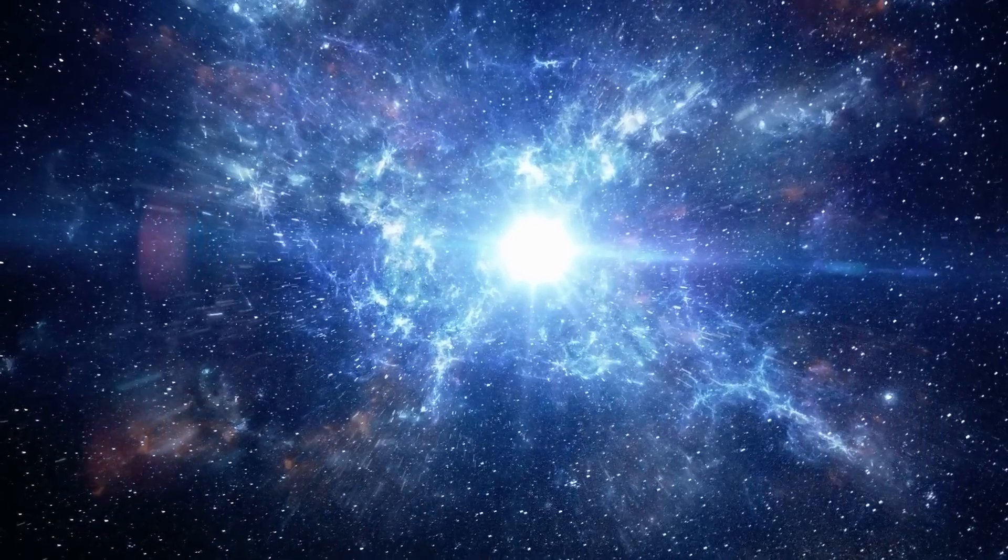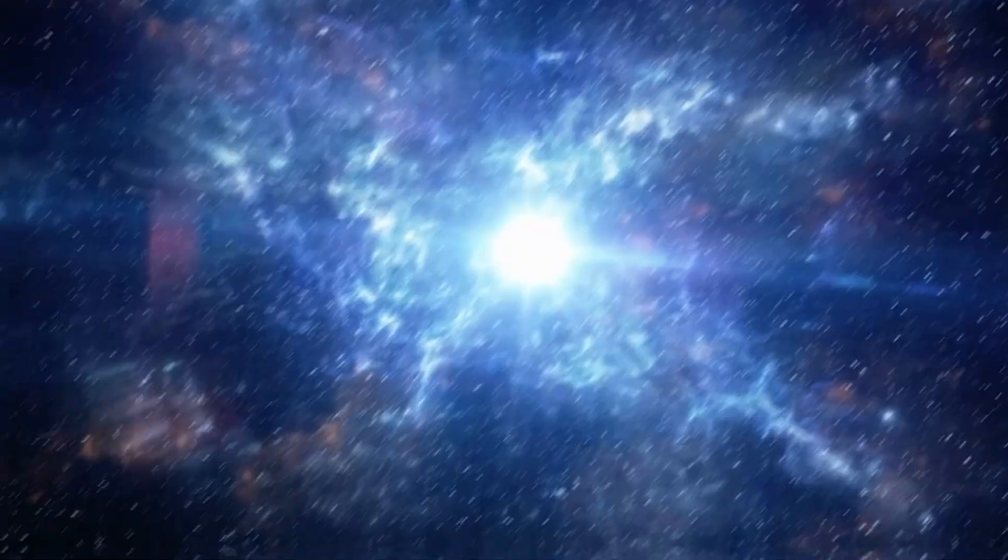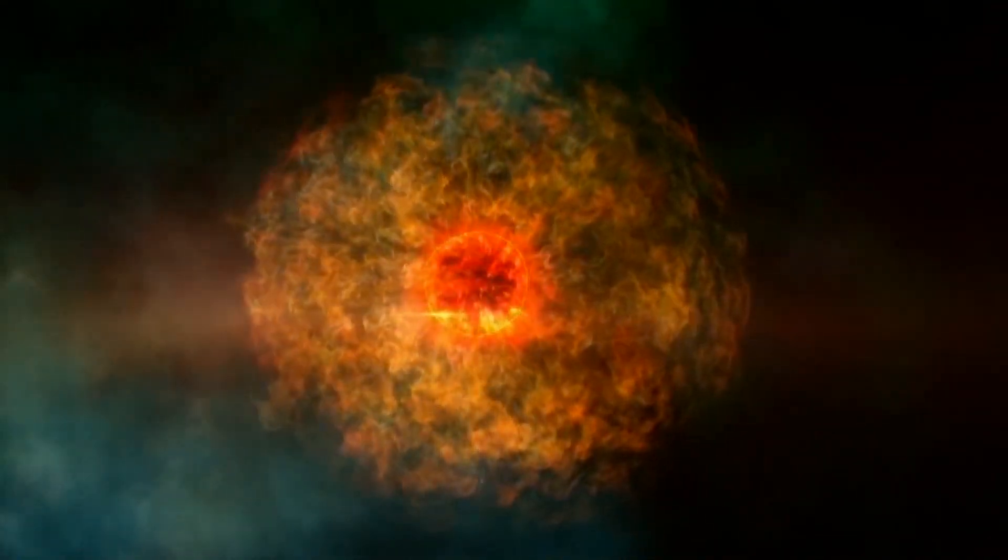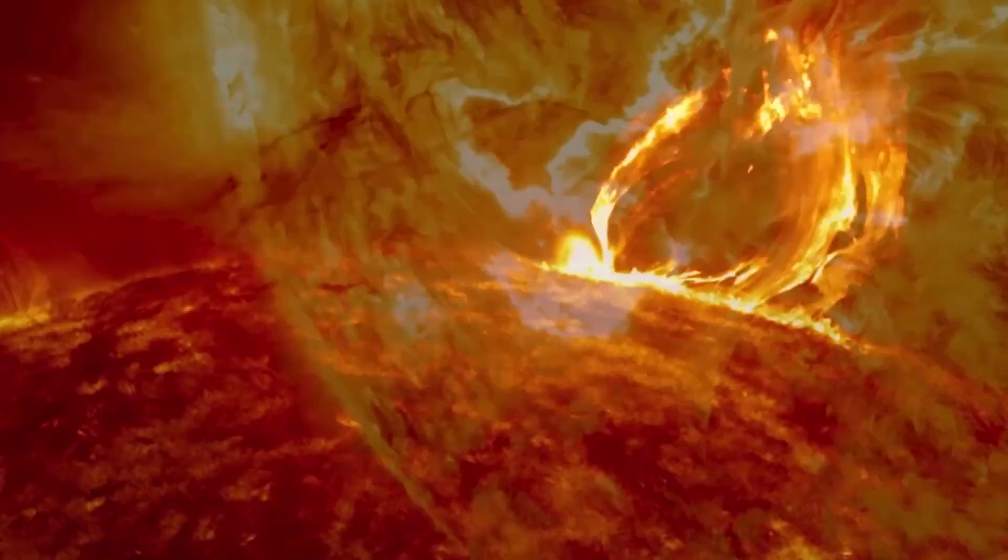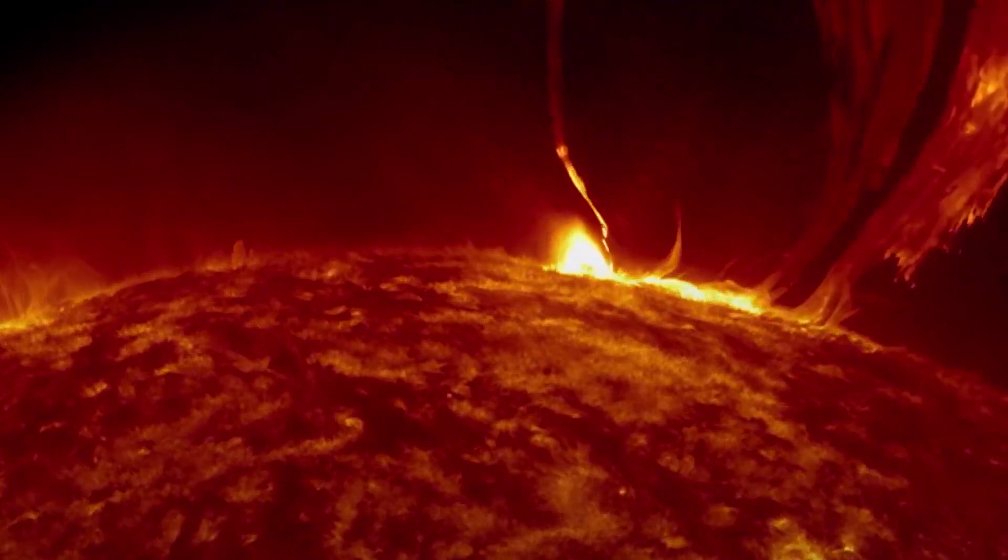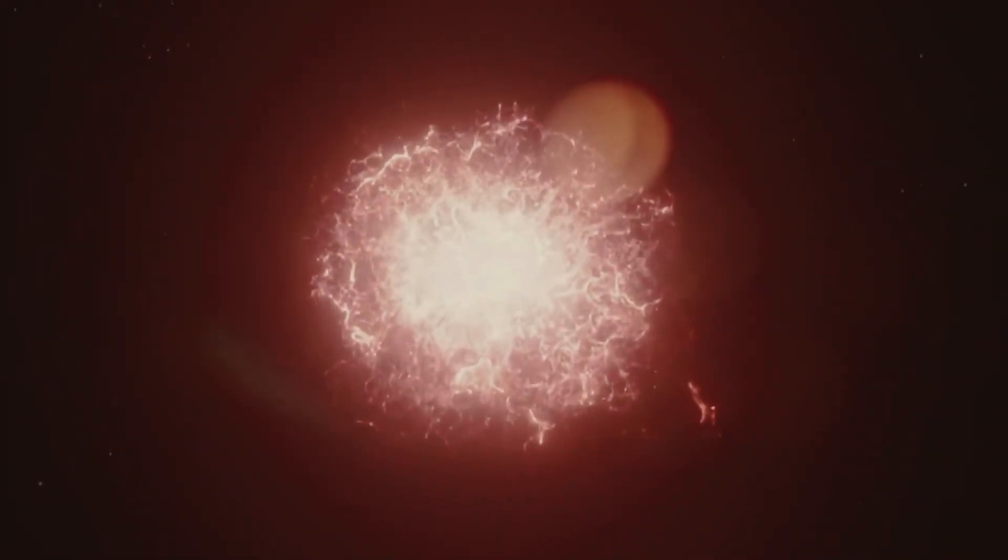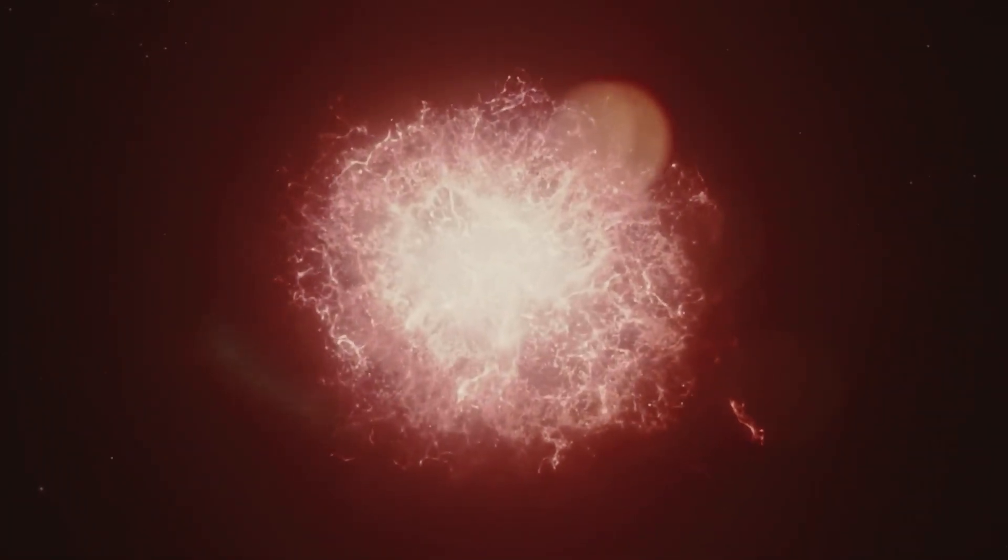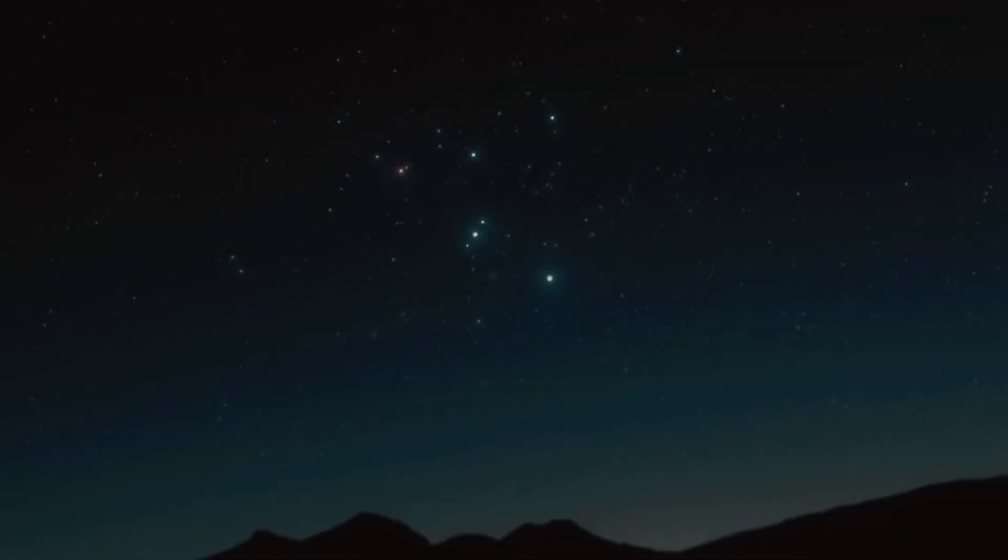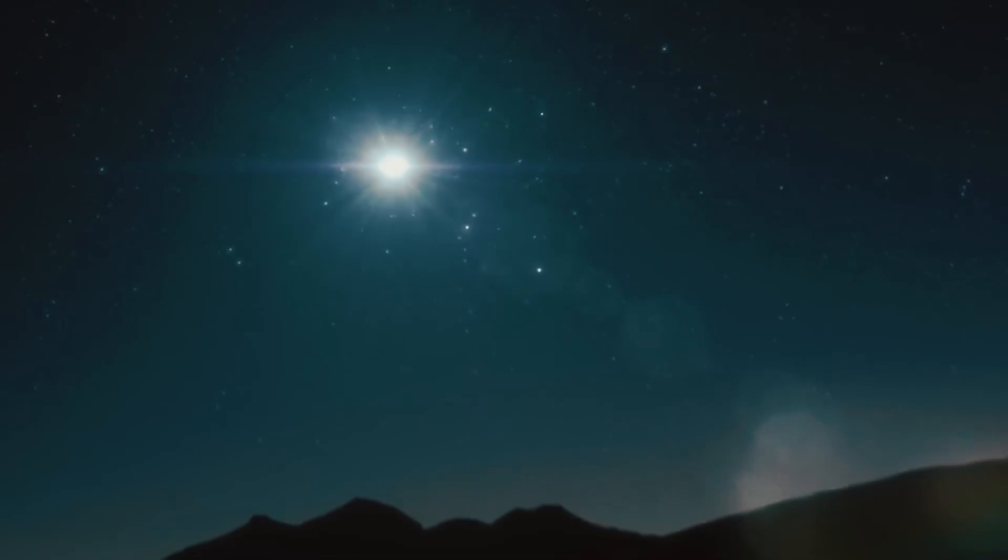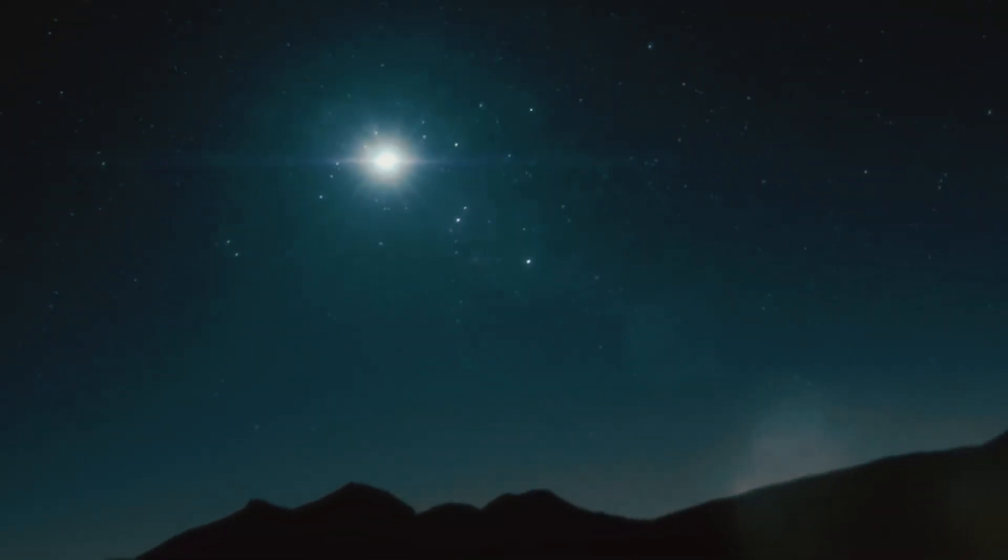What would Betelgeuse's supernova explosion look like from Earth? Earth's biosphere would be unaffected, but that doesn't guarantee that no one would notice. According to Goldberg and Bulger, Betelgeuse will shine more than three months after its explosion with a luminosity comparable to that of half the moon. Nine times fainter than the full moon, a single point would contain all its luminosity. So, it would look like a very bright beacon in the sky that could be seen during the day and cast shadows at night.